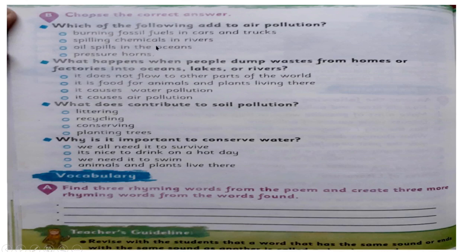Spilling chemical in the river — when we put chemicals into the river, gas is released. Oil spilled in the ocean also causes pollution.